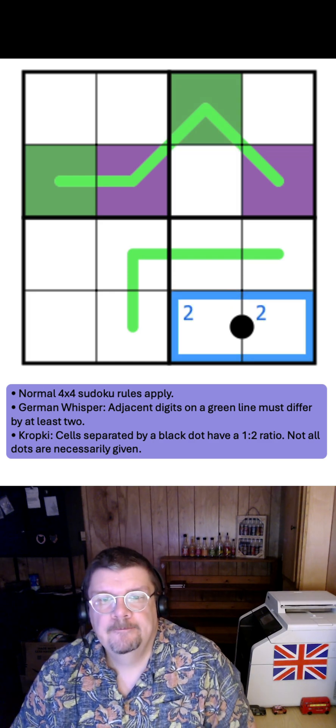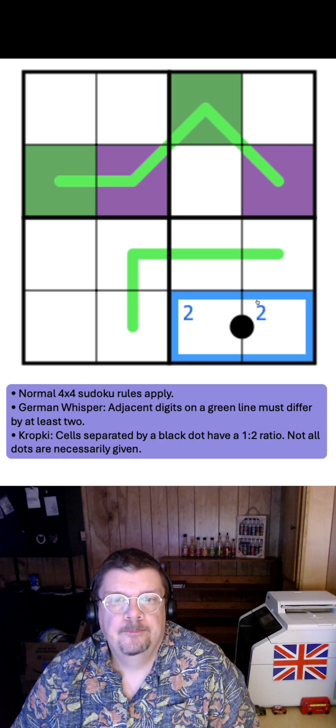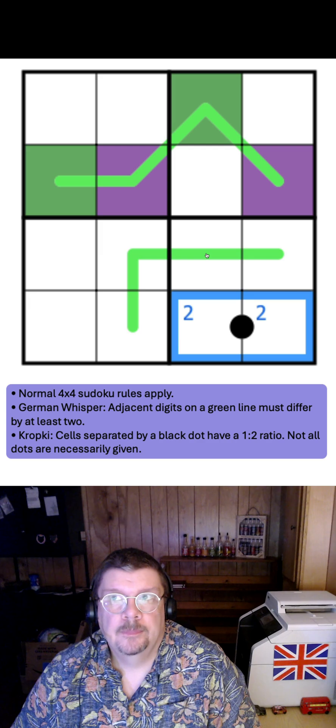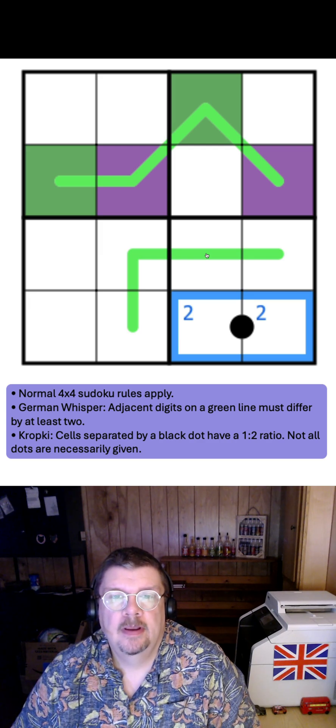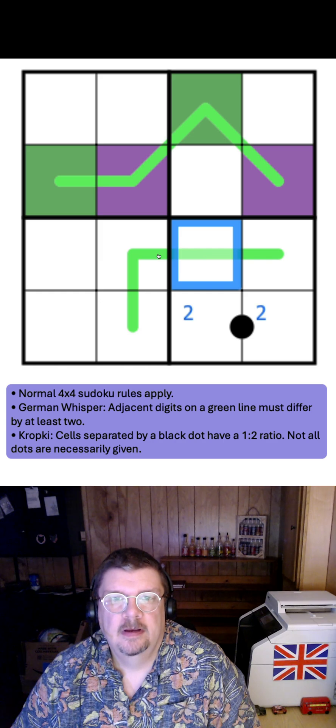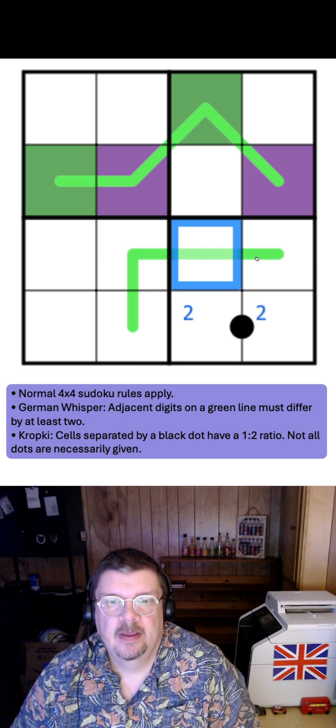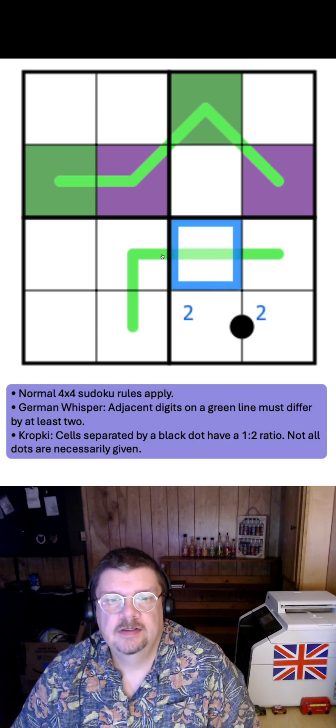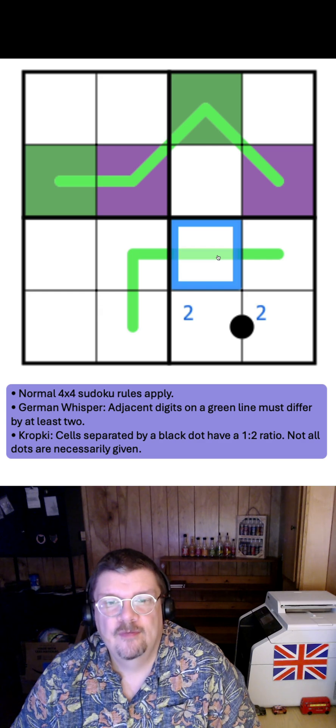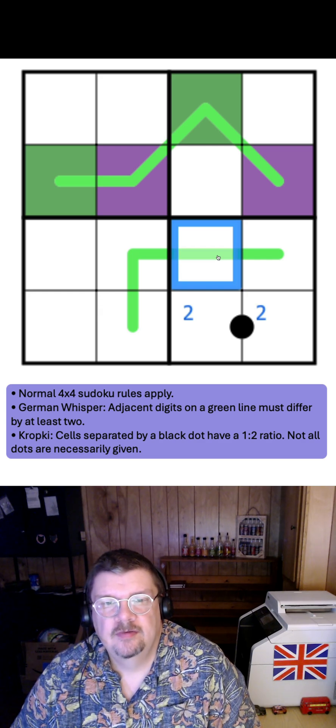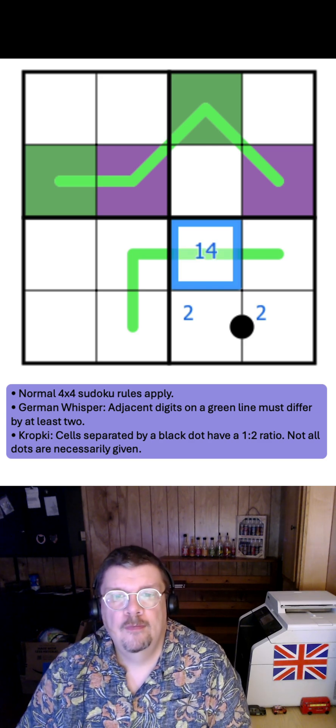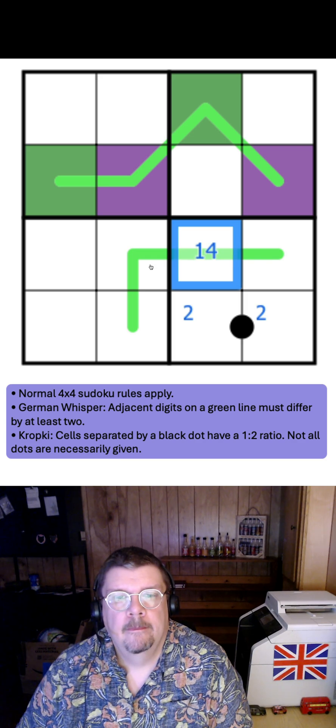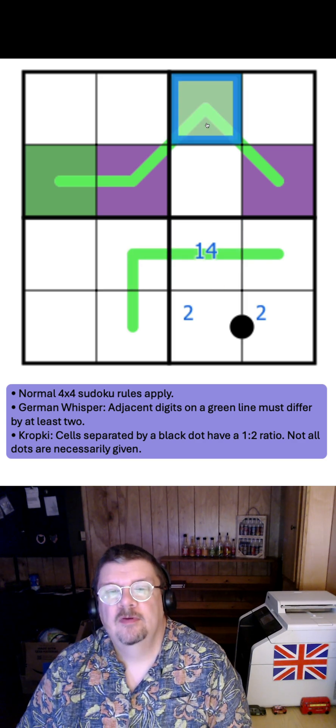I do know that there is a 2 here. So 2 and 3 cannot go in the middle of a line where they, or in a place in the line where they see both of their neighbors. Because the only digit that can go next to a 2 on a German Whisper in a 4x4 is a 4. And the only digit that can go next to the 3 is the 1. So this must be 1 or 4. This must be 1 or 4.